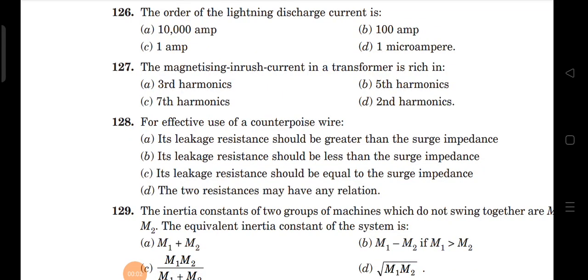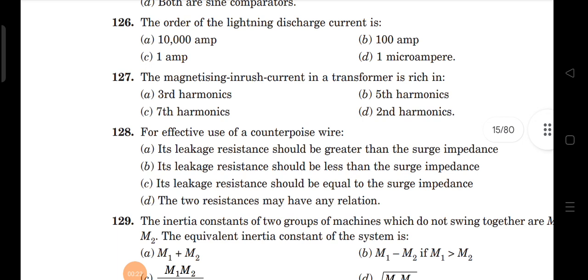Good morning. Continuation with the topic — next question: the order of the lightning discharge current. The lightning discharge current is always in the order of kilo amperes. The first option, 10,000 amperes, means 10 kilo amperes — that is correct. The second option, 100 amperes, is less than 1 kilo ampere, so the first option is correct.